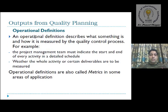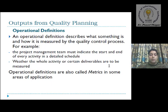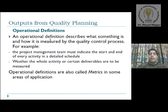Next is operational definition, another output strategy. An operational definition describes what something is and how it is measured by the quality control processes. The project management team must indicate the start and end of every activity in detail. We define what our starting and ending activities are, and whether the whole activity or certain deliverables are to be measured. Operational definition is also called a metric in some areas of application.